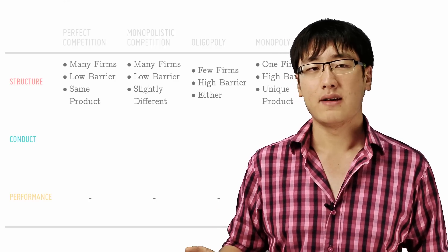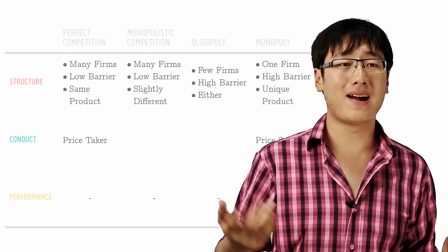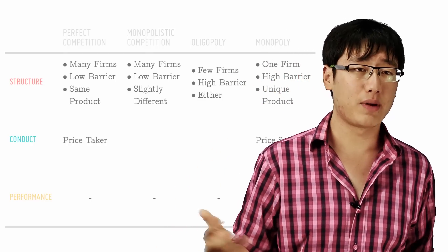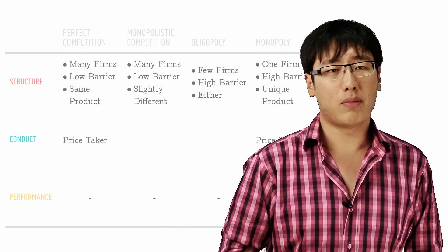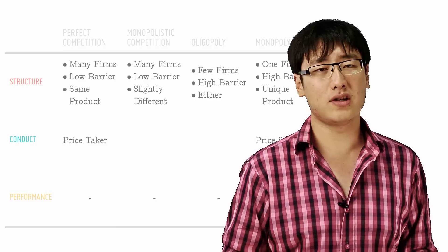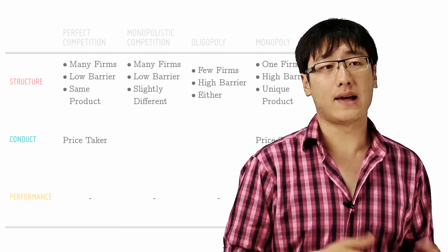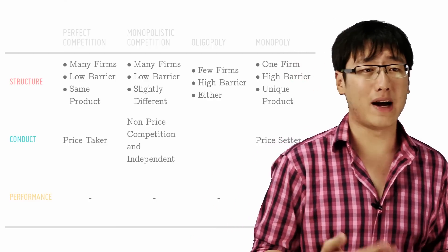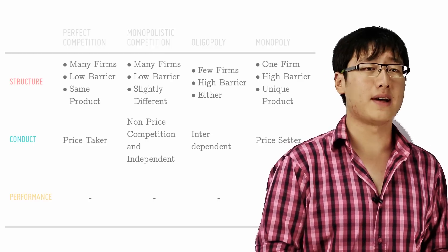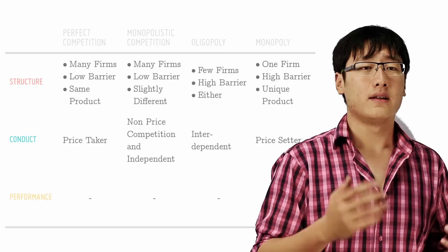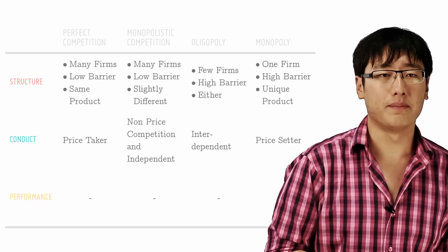For conduct, PC firms are price takers. Monopolists are price setters because of their market power — PC has no market power. Monopolistic competition firms engage in non-price competition and they are independent. Oligopolists are interdependent on each other.